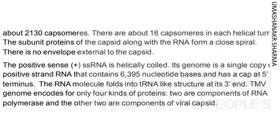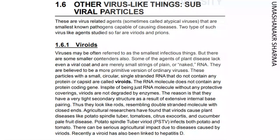There are about 16 capsomers in each helical turn. The subunit proteins of the capsid along with the RNA form a close spiral. There is no envelope external to the capsid. The positive sense SS RNA is helically coiled. Its genome is a single copy of positive-strand RNA that contains 6,395 nucleotide bases and has a cap at the 5' terminus. The RNA molecule folds into a tRNA-like structure at its 3' end. TMV genome encodes for only four kinds of proteins: two are components of RNA polymerase and the other two are components of the viral capsid.